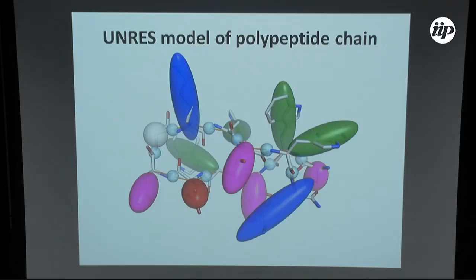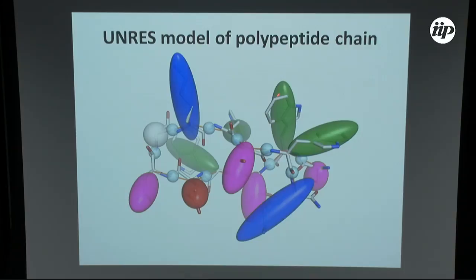I will talk about UNRES. UNRES, as already mentioned in a previous talk, is one of the force fields we are developing — Adam, me, and other members of the group — in cooperation with Harold Scheraga. In the UNRES force field, we have only two centers of interaction per amino acid residue: one is the peptide group, represented by balls, and the other is the united side chain, represented by ellipsoids of different sizes and colors because they have different parameters for different amino acids. The model is much simplified compared to the original all-atom model.